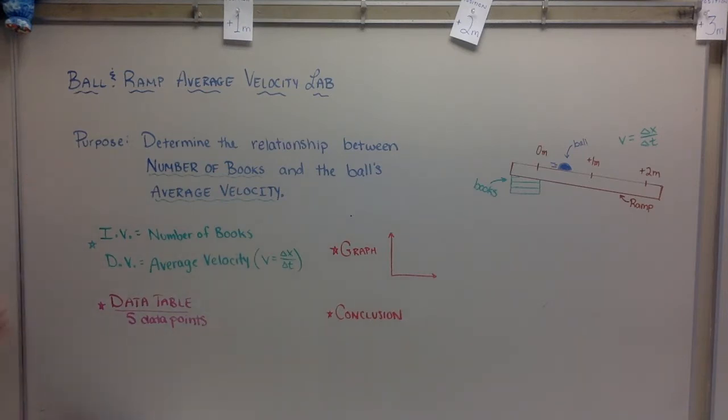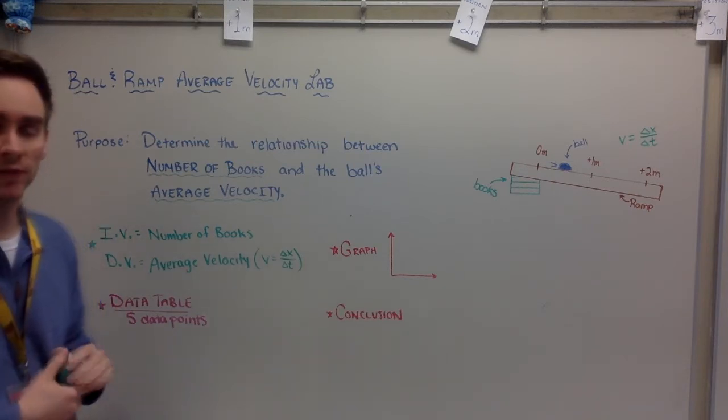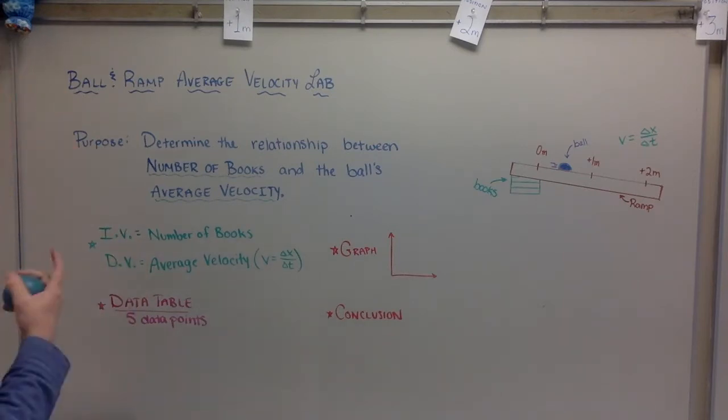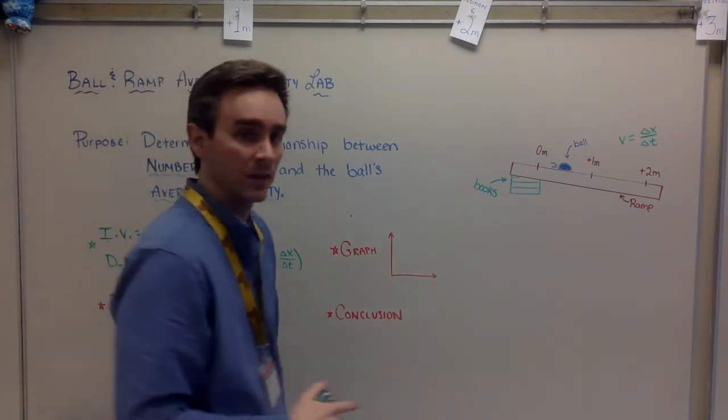Determine the relationship between the number of books and the average velocity of a ball down a ramp. So here's what you guys are going to be doing. You got two variables here: you're going to have a number of books and your average velocity. Let me talk a little bit about the setup here.